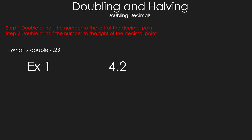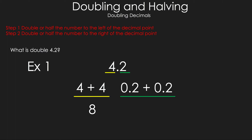Starting with Example 1, we separate the number into two sections. We double 4 by adding 4 to itself to get 8. Then we double 2 tenths by adding it to itself to get 4 tenths. Combining them gives us 8.4 as the answer.